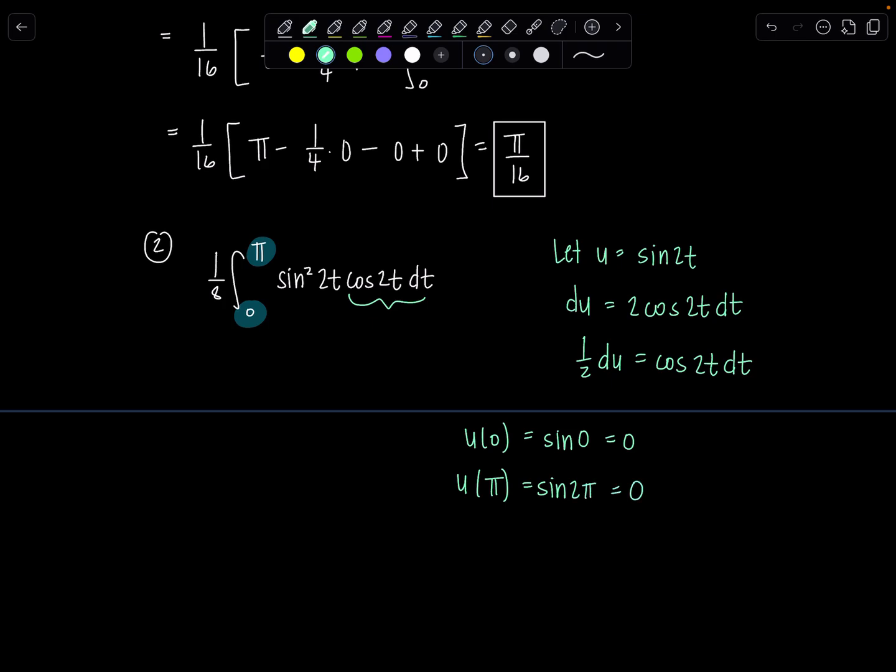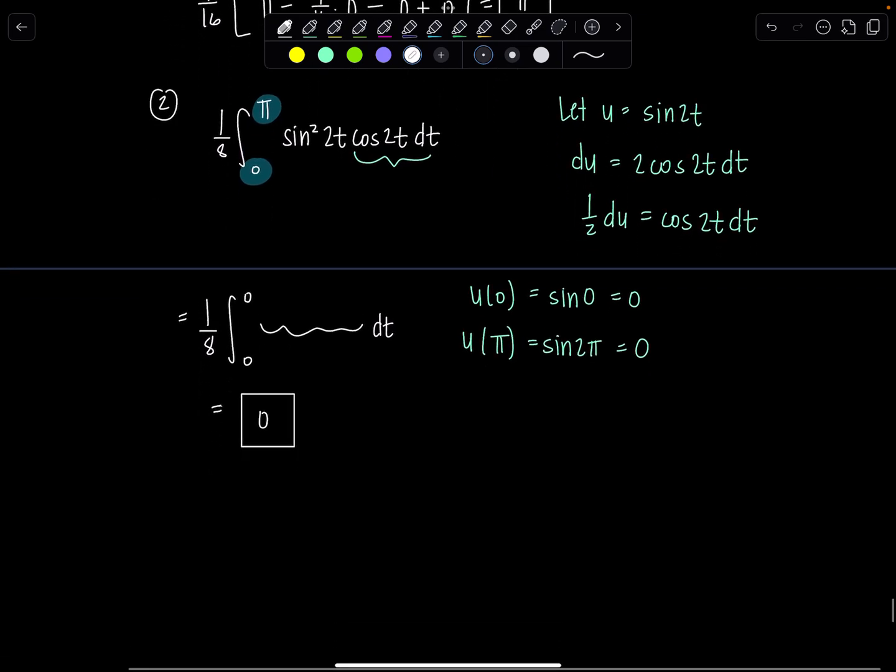Oh my goodness. What does that mean for us? That means we have no work to do. This is going to be one eighth. When I switch my limits, it's going to go zero to zero. And I don't even care what the integrand is. Because if your lower limit and upper limit are the same constant, then we know this is all equal to zero. There's no area under the curve. We haven't moved. So we have pi over 16 plus zero, which is pi over 16. And we're done.